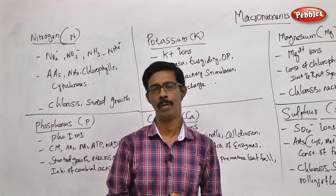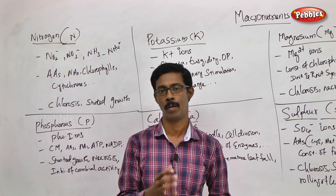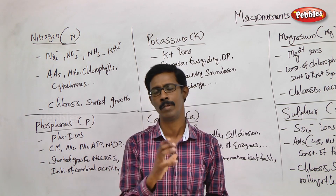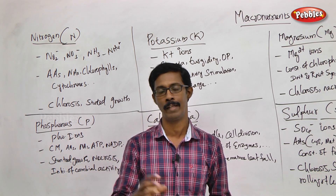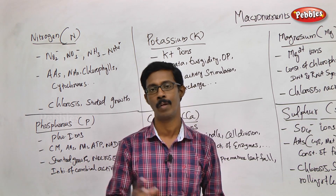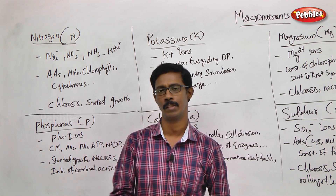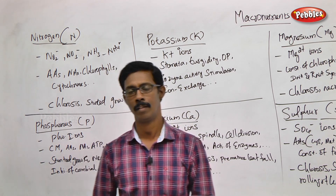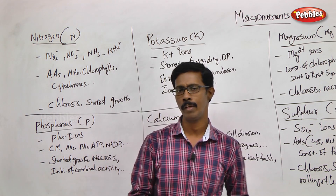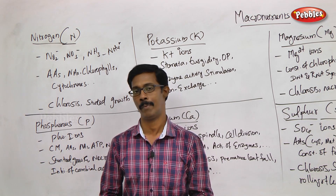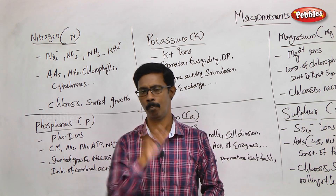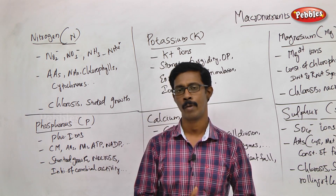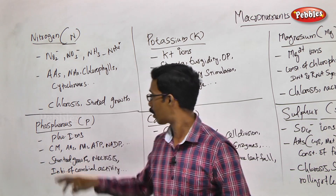The major biomolecules include proteins, nucleic acids, carbohydrates, lipids, and so on. Within these, the building blocks are amino acids, nucleotides, simple sugars, and fatty acids. So where is nitrogen found? It is found across all these amino acids and their compounds.